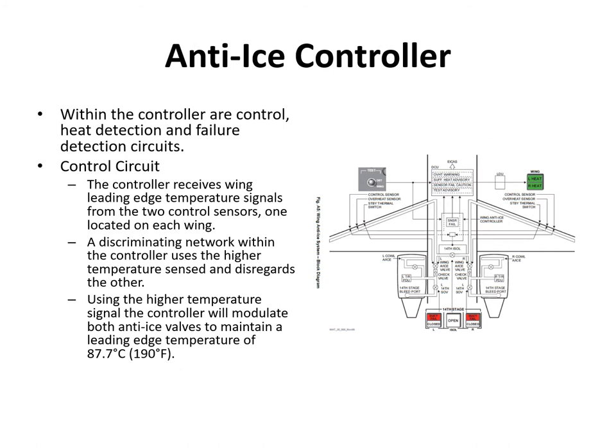Within the controller there are two circuits: the heat detection and failure detection circuits. The normal control circuit uses the two outboard control sensors - one on each wing - as input. The controller uses the highest of those two values as the reference point, then modulates the current signal to the torque motors to maintain a leading edge temperature of 87.7°C. Once it reaches 87°C it starts to reduce torque motor current, and increases it again as temperature decreases - maintaining 87.7°C as a constant level.